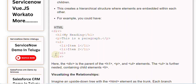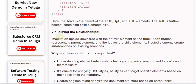Visualizing the relationships: Imagine an upside down tree with the <html> element as the trunk. Each branch represents a parent element, and the leaves are child elements. Nested elements create sub-branches on existing branches.